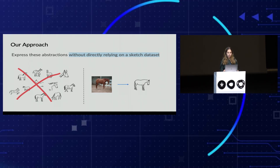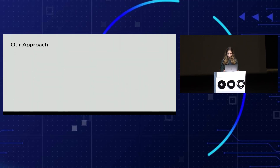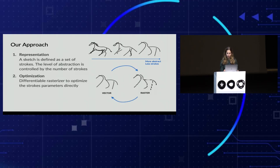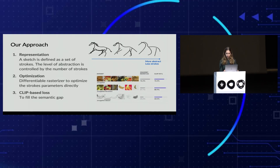In contrast, our approach is to express these abstractions without directly relying on a sketch dataset. We propose three key ideas: first, the representation — we define a sketch as a set of strokes, and the level of abstraction is controlled by the number of strokes. Second, the optimization — we don't train a network at all; we use a differentiable rasterizer to optimize the stroke parameters directly. Third, we use the CLIP model to fill the semantic gap.